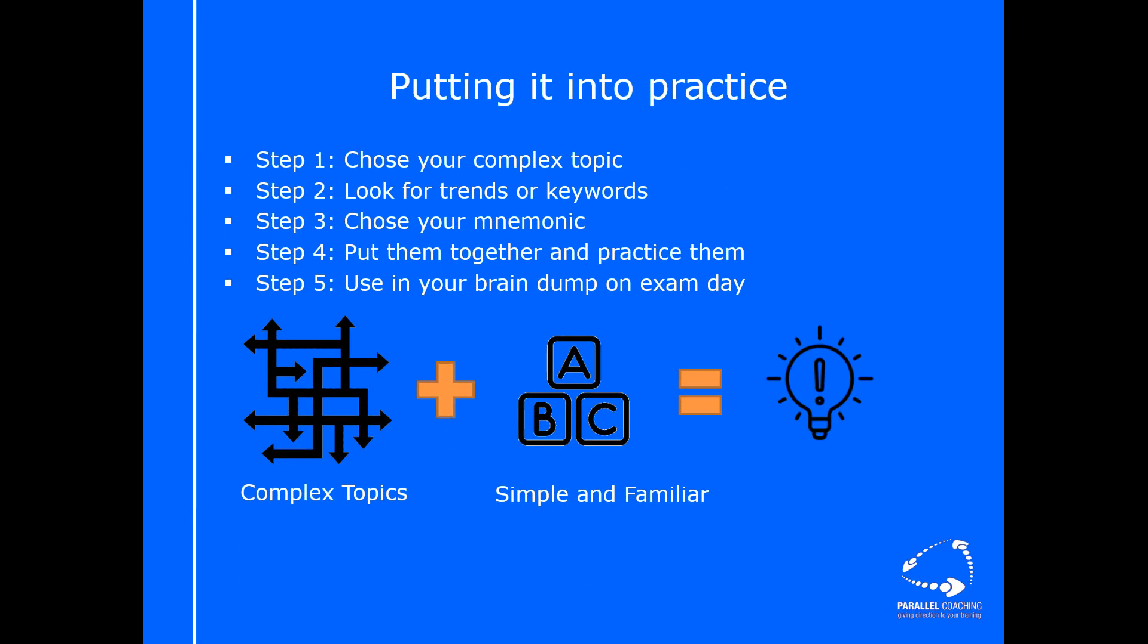So let's put this into practice. In order for you to create your own mnemonics and break down your own learning, there's five steps you need to take. First of all, choose your complex topic. You might be looking at the heart, for example. Then you want to look for trends or keywords. This could be literally highlighting if it's a process, maybe the first letter of a few processes, or it could be that you relate it to something you already do know, like we were talking about analogies earlier.